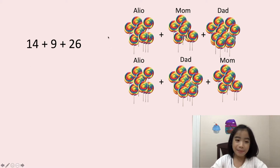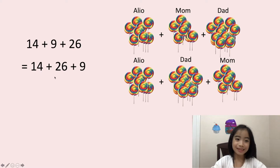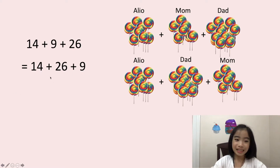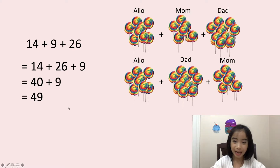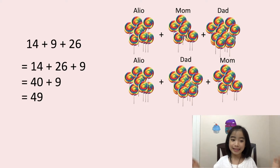Now, let's look back at this expression. We can switch the 9 and the 26. So here we have 14 plus 26 plus 9. 14 plus 26 equals 40. 40 plus 9 equals 49. So when doing addition, you can switch the order to make it easier to do the calculation.